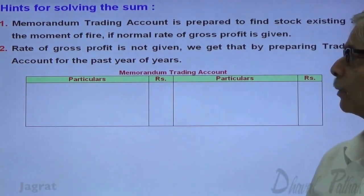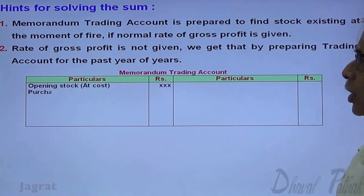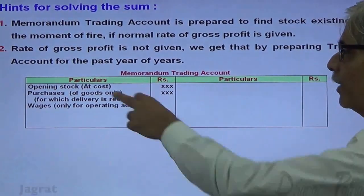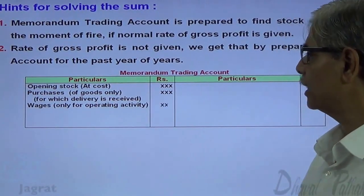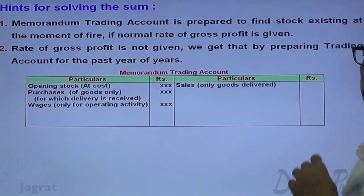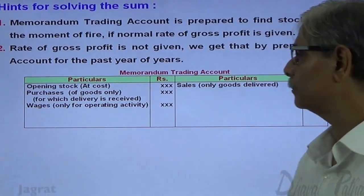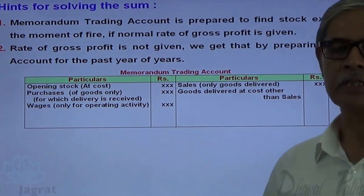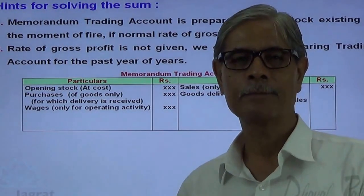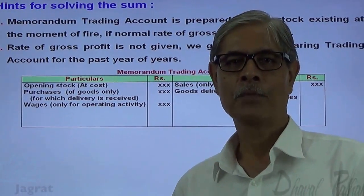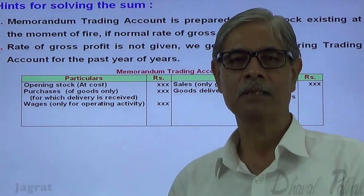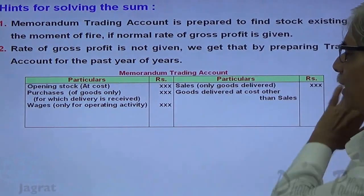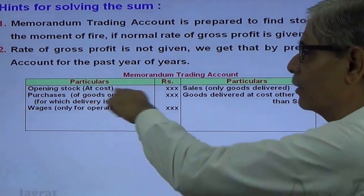This is how the memorandum trading account is prepared. It includes: opening stock; purchases of goods only for which delivery has been received; wages, only for operating activity; sales, only those sales for which goods have been delivered; and goods debited at cost rather than sales price, which includes goods taken for personal use, goods given for charity, and goods distributed as free samples.